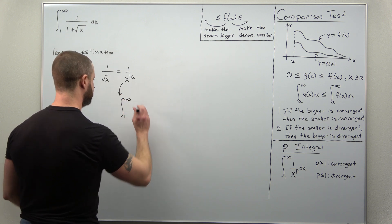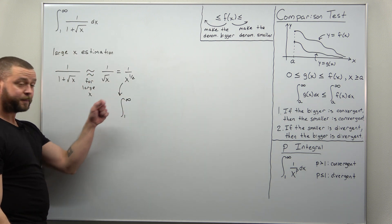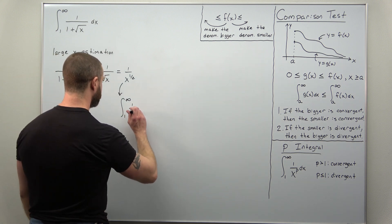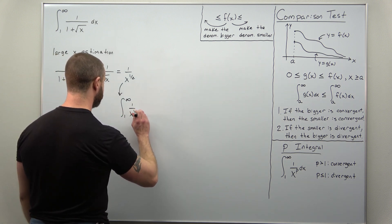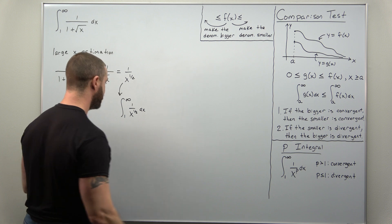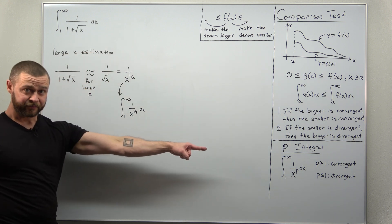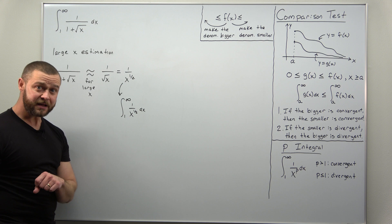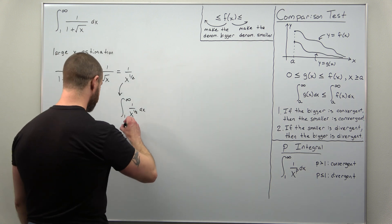If we're thinking of an improper integral with that function, the improper integral from 1 to infinity of 1 over x to the one-half power, that is a divergent p integral, since the value for p here...